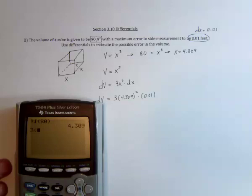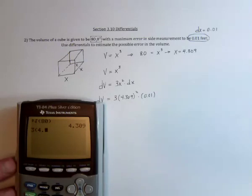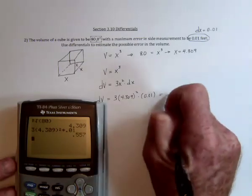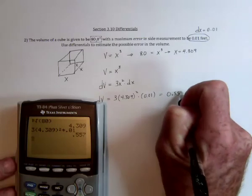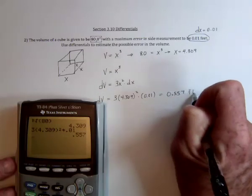So 3 times 4.309 squared times 0.01. So it could be off by a little more than half a cubic foot.